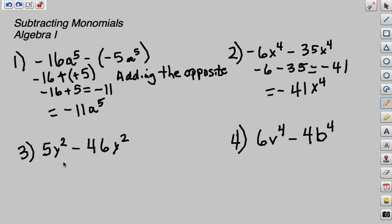Number three: 5y squared minus 46y squared. Again, we're going to subtract the coefficients. 5 minus 46 is going to equal negative 41, and that will be simplified to negative 41y squared.